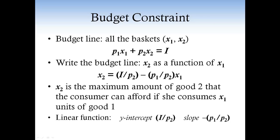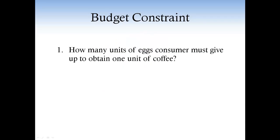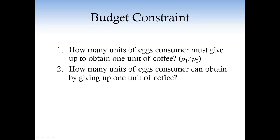Let's focus on the slope of the budget line. The slope of the budget line has many economic interpretations. Consider the following: how many units of eggs must the consumer give up to obtain an extra unit of coffee? The answer is p1 over p2. And how many eggs can you obtain by giving up one unit of coffee? Again, the answer is p1 over p2.